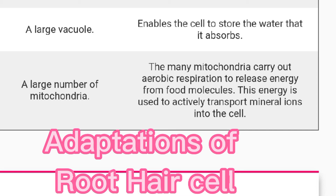Root hair cells have to absorb mineral ions from the soil by the process of active transport. For this purpose they need a lot of energy, and they have plenty of mitochondria to meet that energy demand.